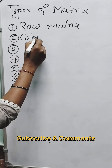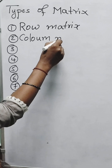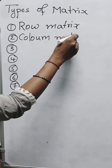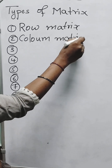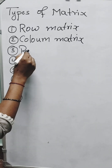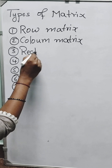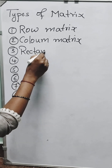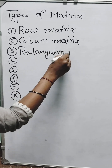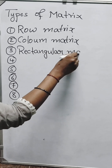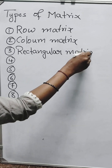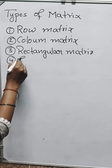Second one is a column matrix. Third one is the rectangular matrix. Fourth one is a square matrix.